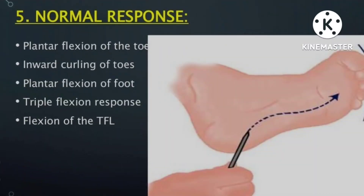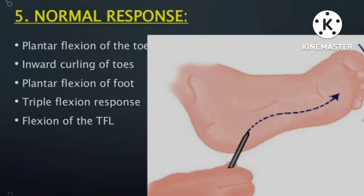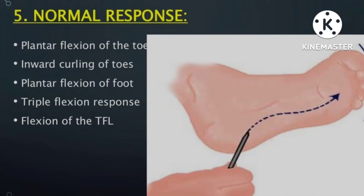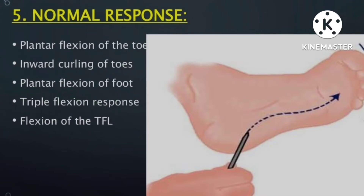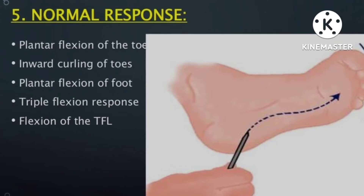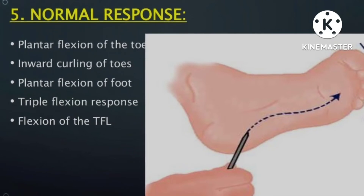In many exams, examiners will ask what constitutes a normal Babinski response. The components of a normal response are: first, plantar flexion of the toe; second, inward curling of the remaining toes; third, plantar flexion of the foot; fourth, the triple flexion response at the ankle, knee, and hip; and fifth, flexion of the tensor fascia lata.